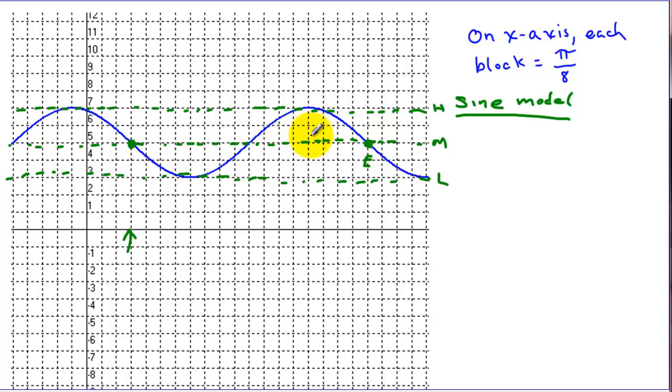If we look at the graph here, this distance is our amplitude. For this problem, the amplitude is 2, so a is going to have the value of 2. Now if I pick this as the starting point, we're going down, so a is going to be negative 2.